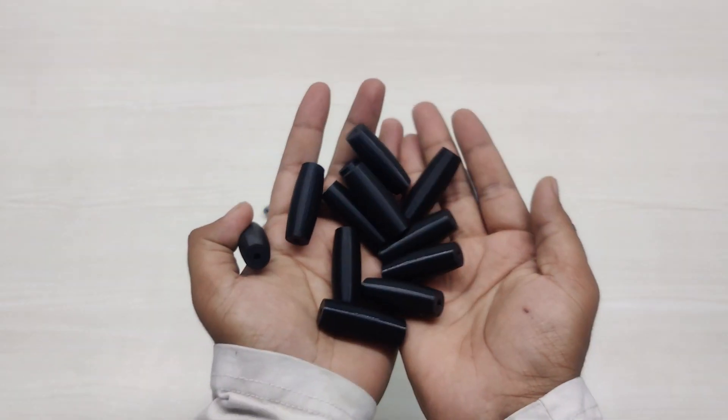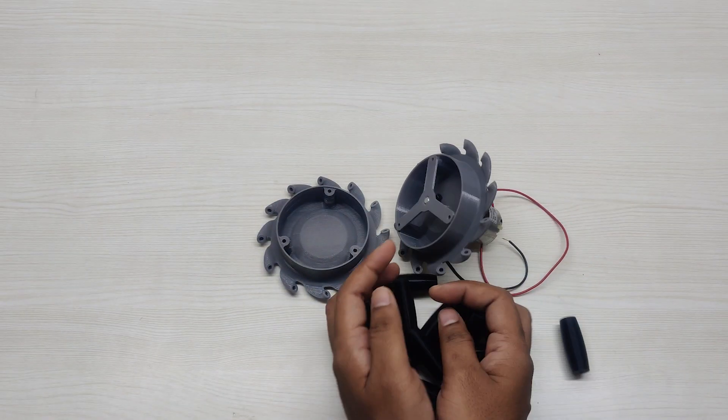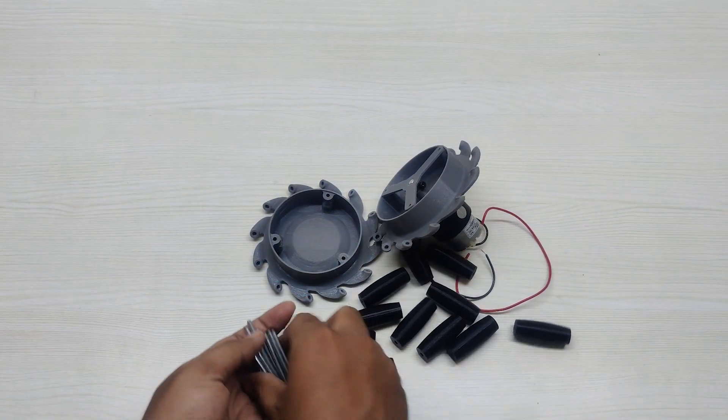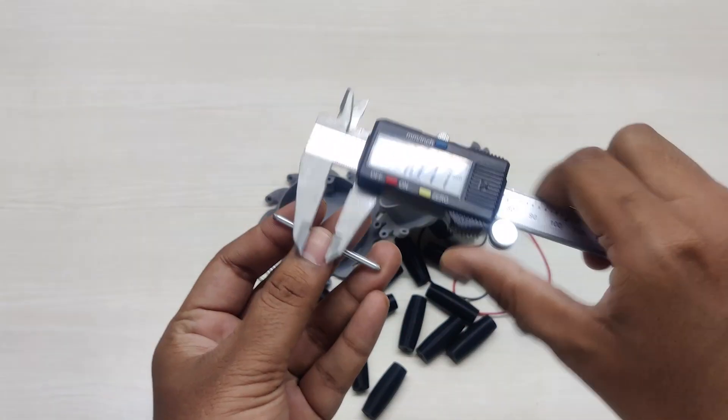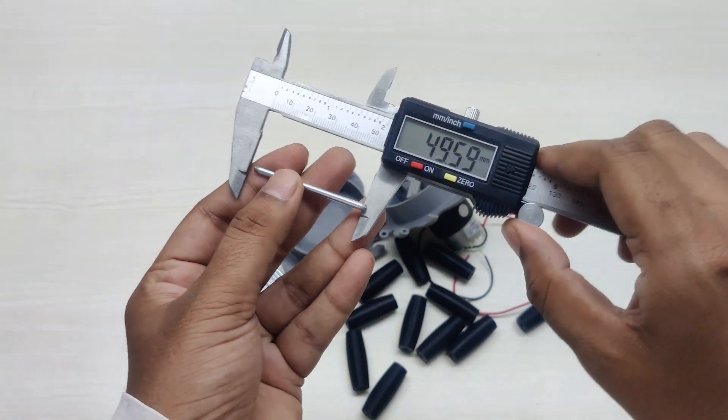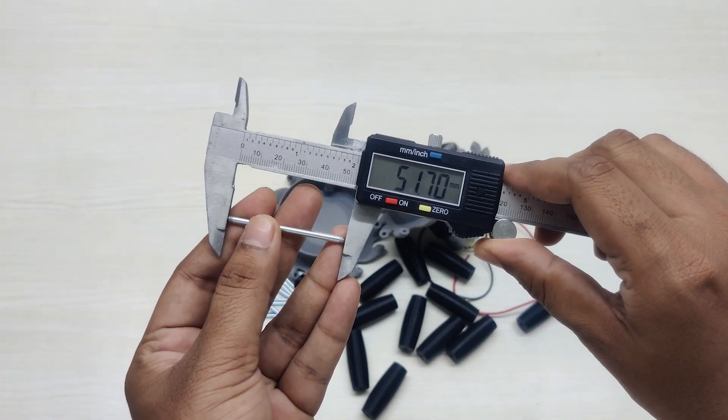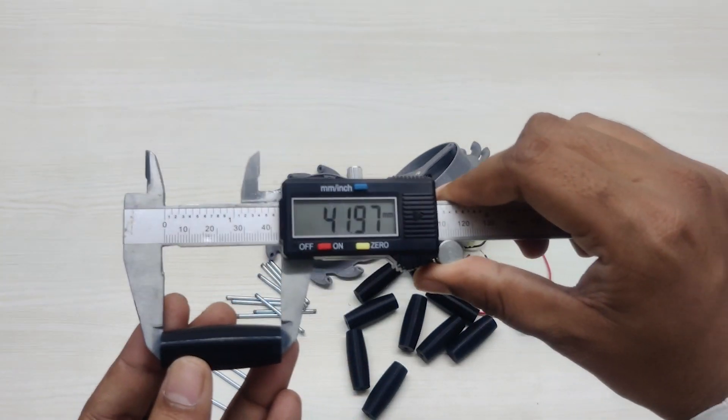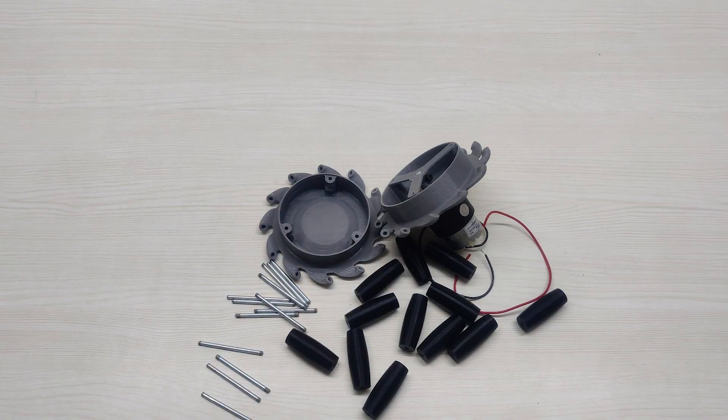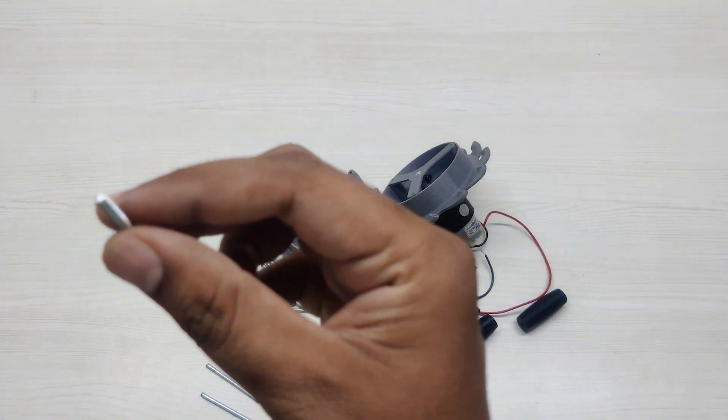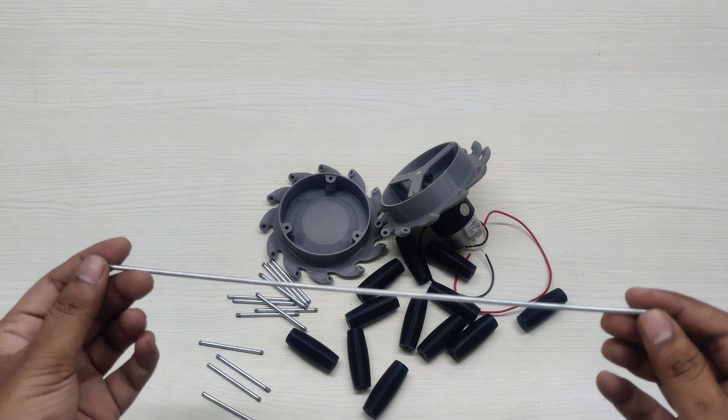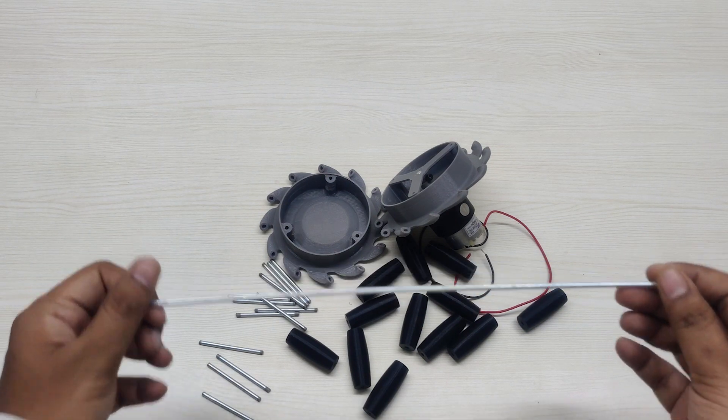Now each wheel has a set of 12 rollers which is attached with the help of 3mm shaft of length 52mm. Here I am using 30cm length out of which five shafts can be cut. Make sure of leaving a clearance of 1mm or 2mm while cutting smaller shafts from the big one.